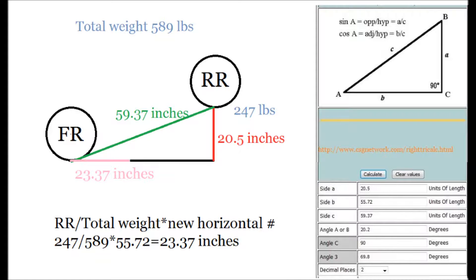What that means is that if we were going to use a jack to put it right 23.37 inches behind the front axle where the pink and the black line meets, the bike would be balanced.